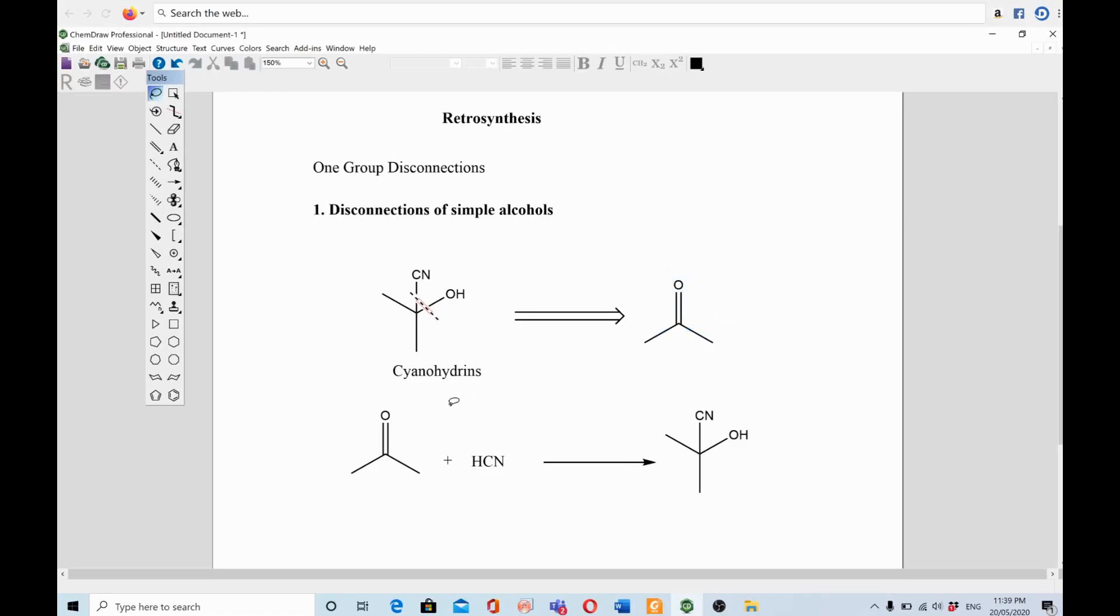If you want to do this reaction in a forward direction, you use acetone and HCN (hydrogen cyanide) to get to the cyanohydrins. So this is the retrosynthesis analysis on top, and this is the synthetic analysis.